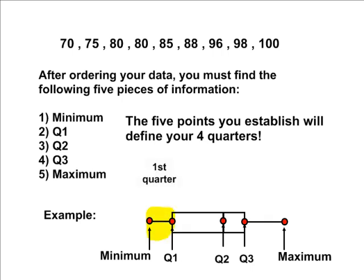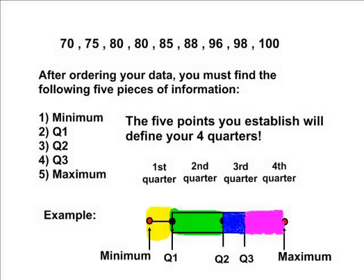Your box and whisker plot will be broken into four different quartiles. The first quartile starts at the minimum and ends at Q1. The second quartile starts at Q1 and ends at Q2. The third quartile starts at Q2 and ends at Q3. And the fourth quartile starts at Q3 and ends at the maximum, and some people call the maximum Q4.